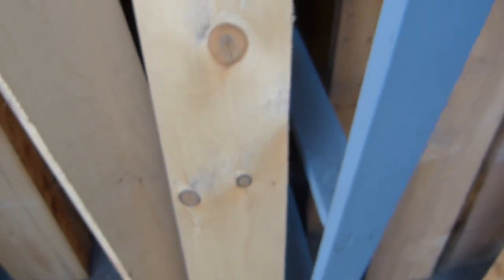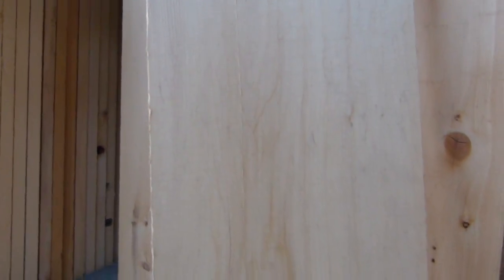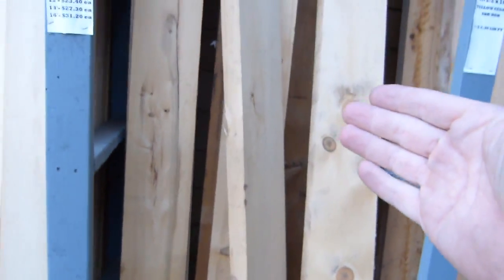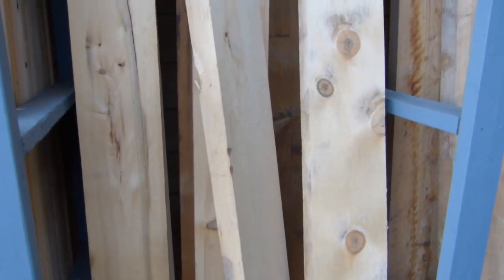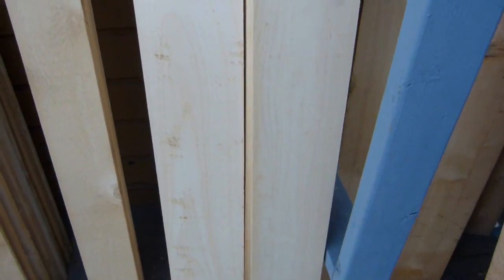This one has lots of knots. Again, face grain. Another board with face grain. No real color variations on yellow cedar, either along the board or across the board. It's not streaky. It looks like this.